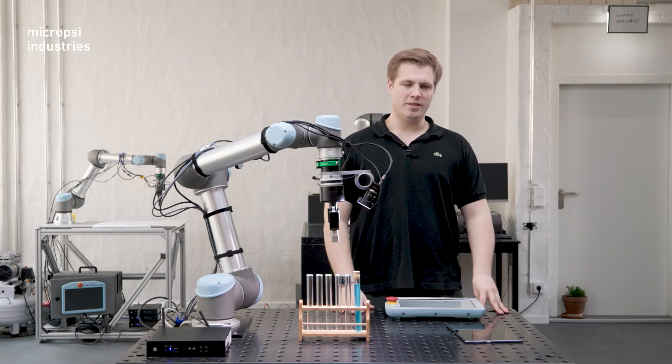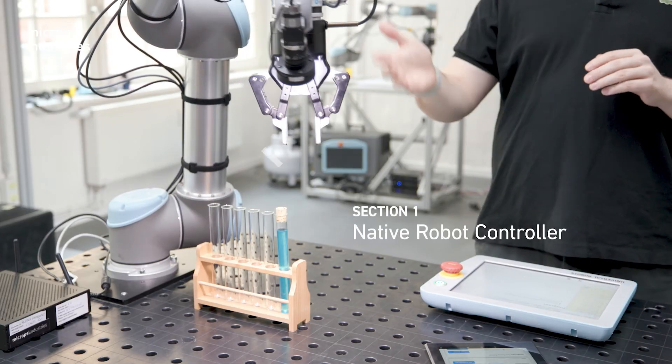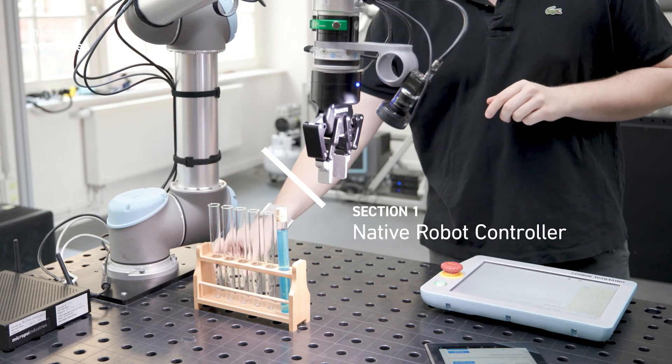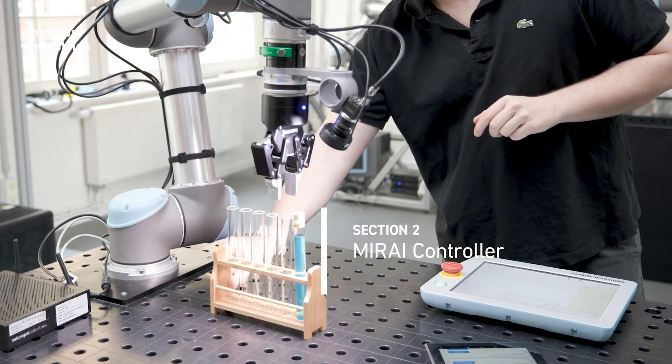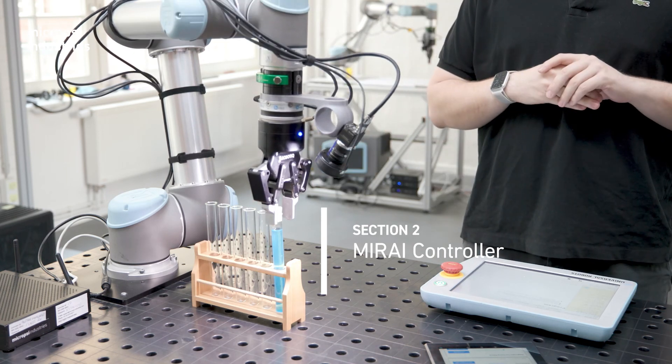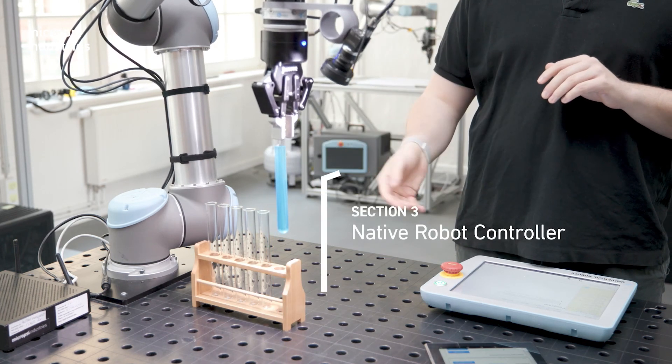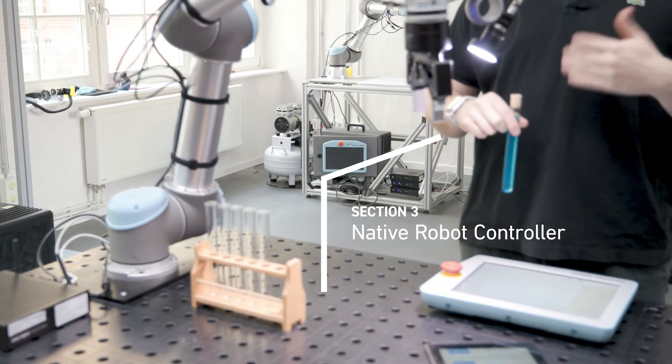There are three sections. The native controller positions the robot above the glass, which is section one. Now Mirai takes over to find the glass beaker and to pick it, which is section two. Now the robot kicked back in to hand me the glass beaker, which is section three.